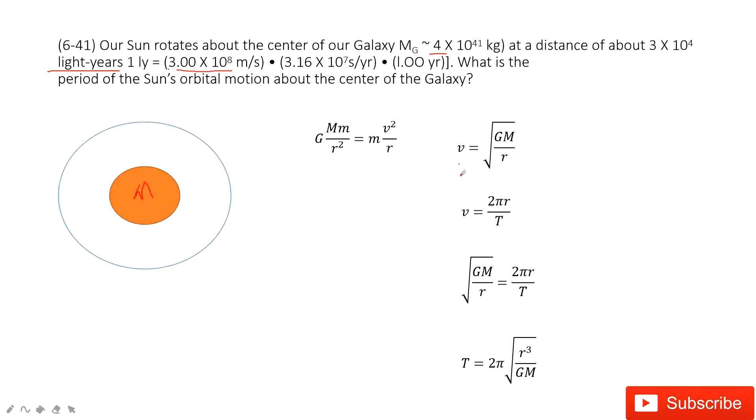In this case, we can get the speed of this circular motion for the sun. But we need to find the period. Now we consider the period.